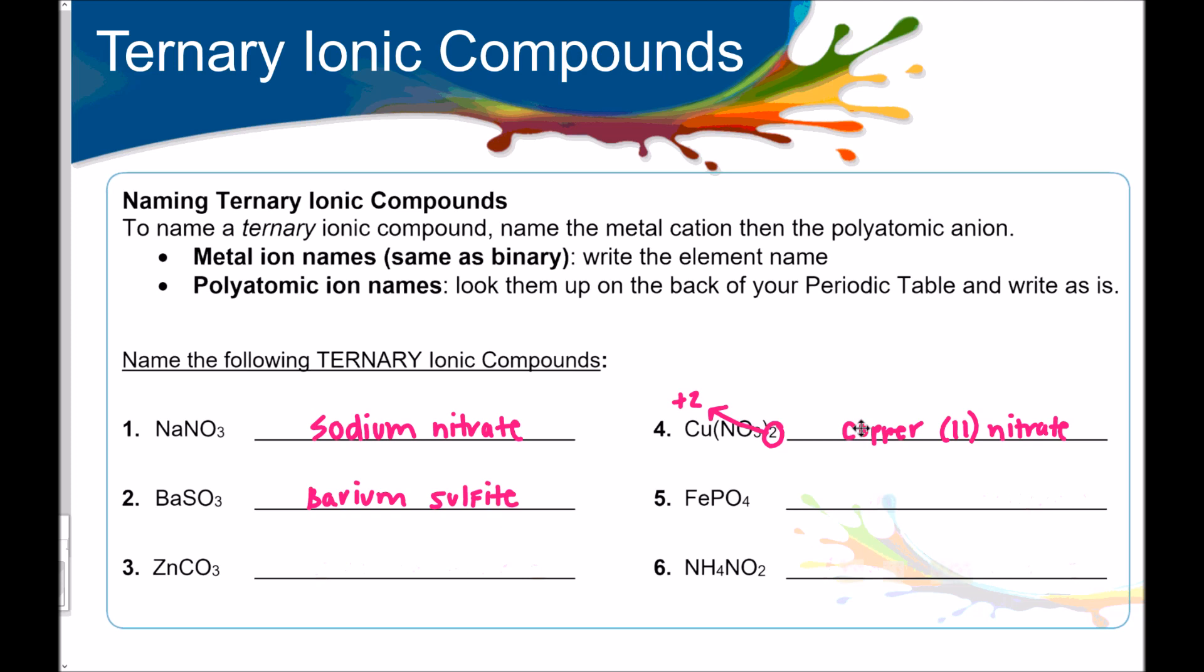Welcome back. Let's see how you did. Number three, we've got zinc, and then over here, we've got carbonate. Zinc carbonate. Remember, even though zinc is in our transition metal section, we do know its oxidation number. Zinc is one that we had to memorize. Its oxidation number is always plus two, so we don't have to put the roman numeral for that.